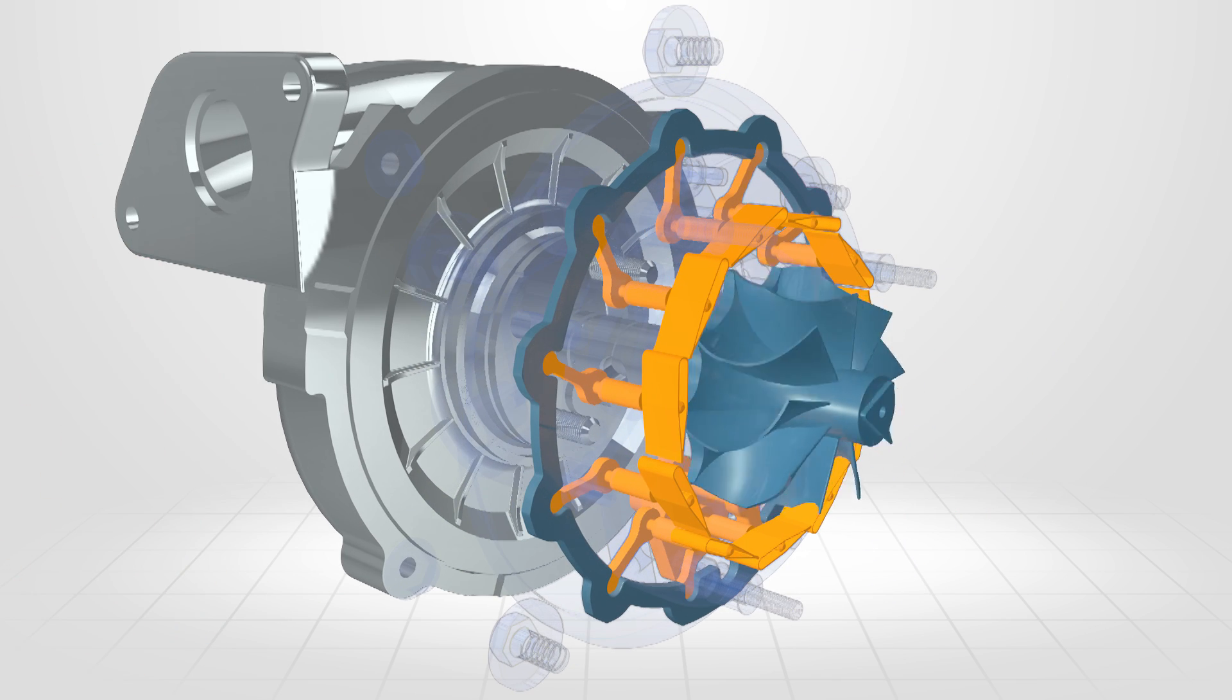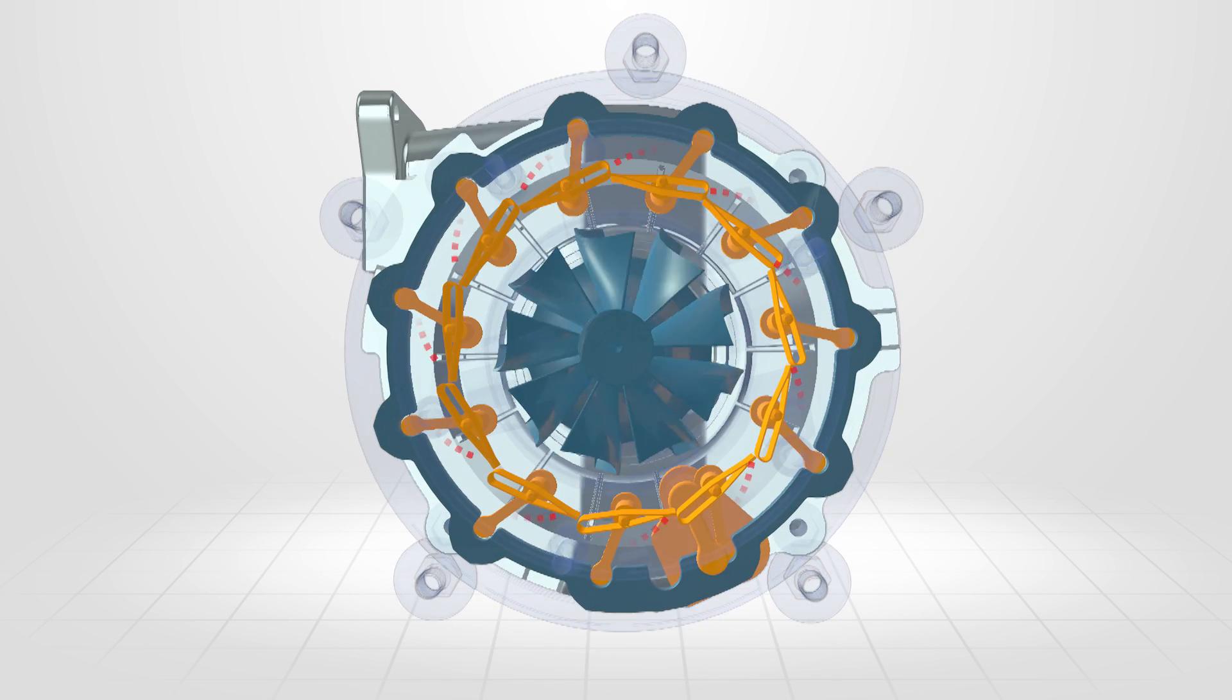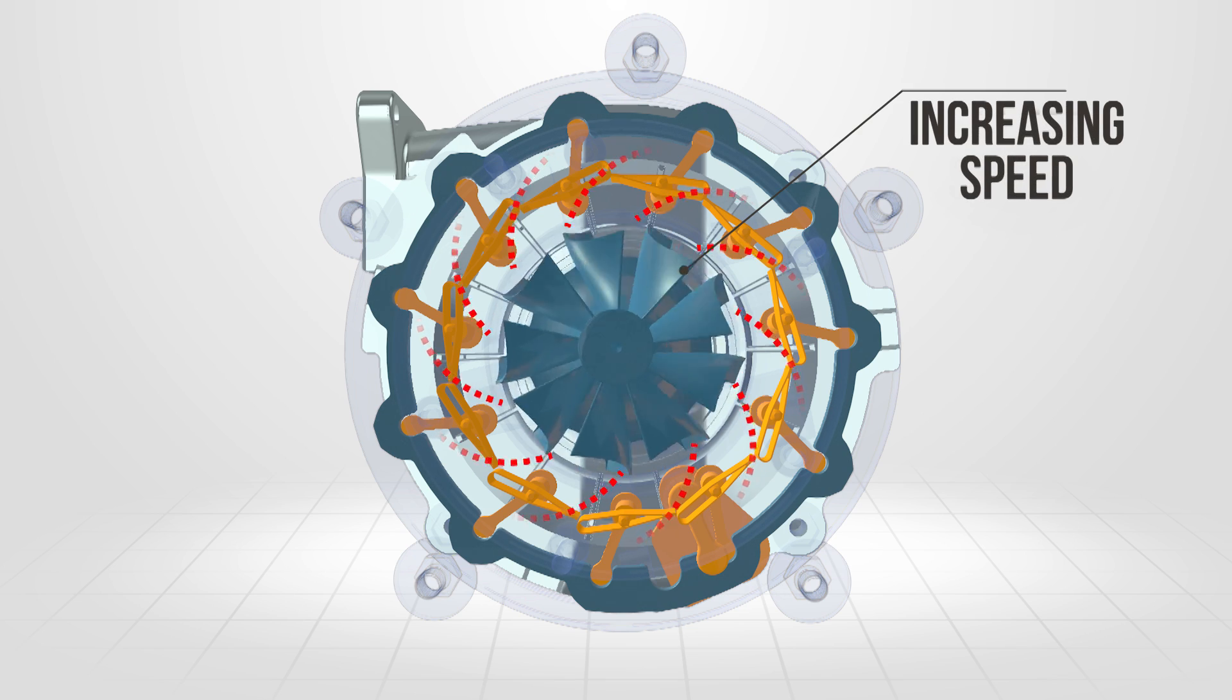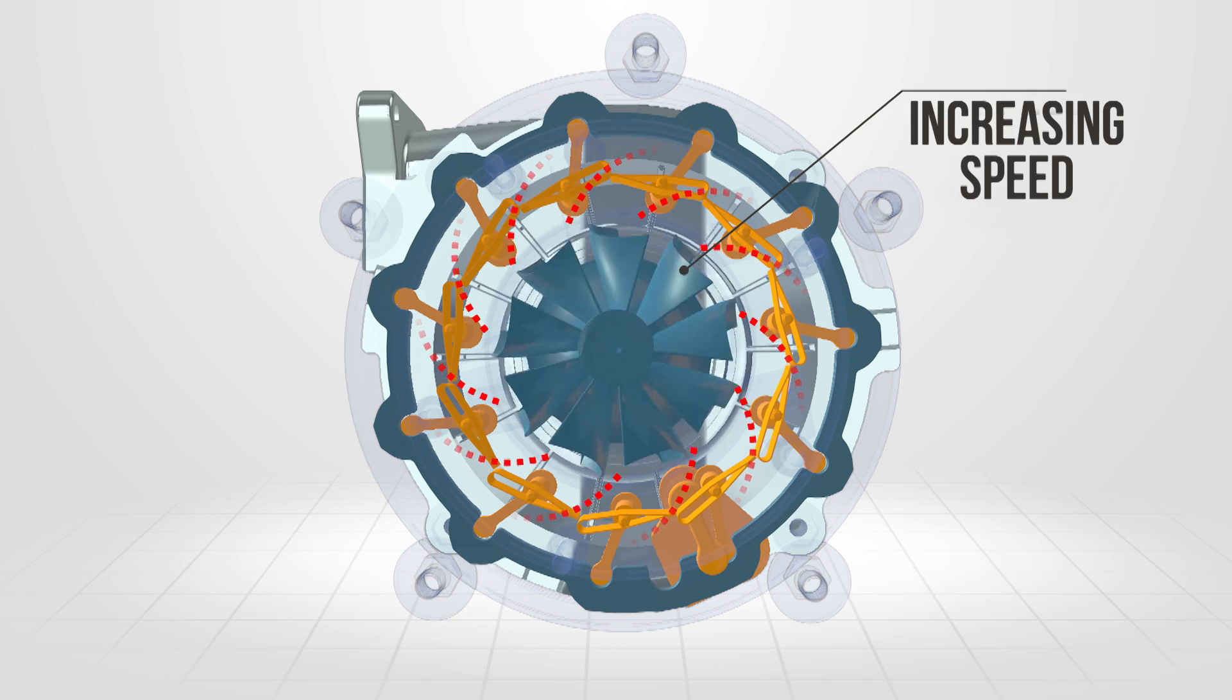With the nozzles in the closed position, only a small quantity of exhaust flows through the turbine. Under light engine load, gas flowing through this narrow passage will increase the turbine speed, therefore reducing turbo lag.